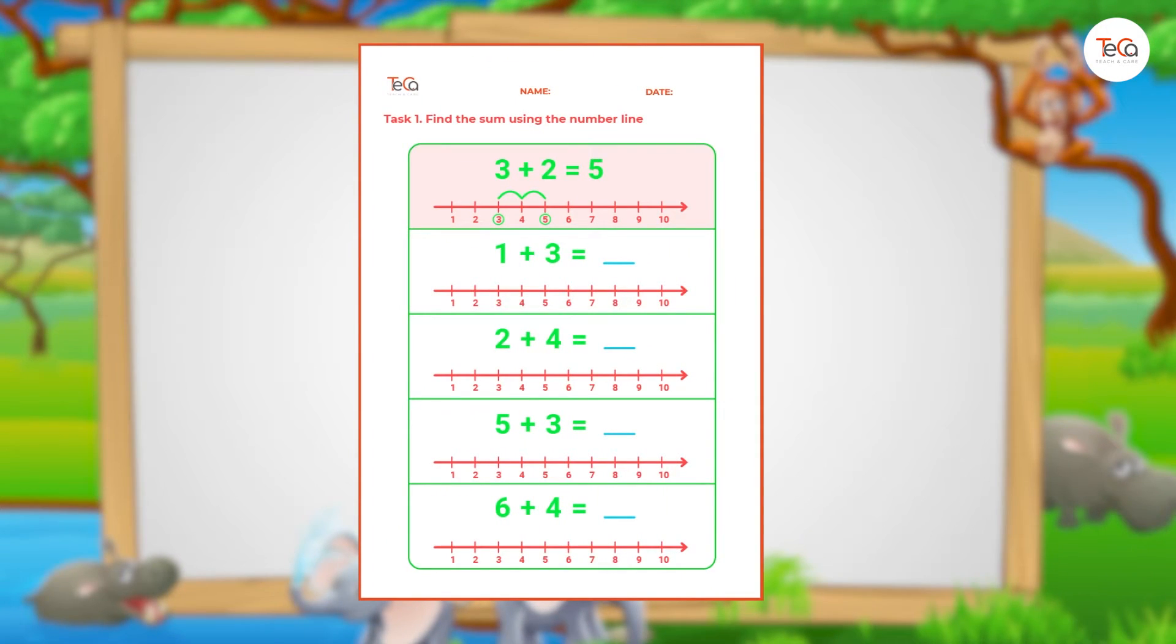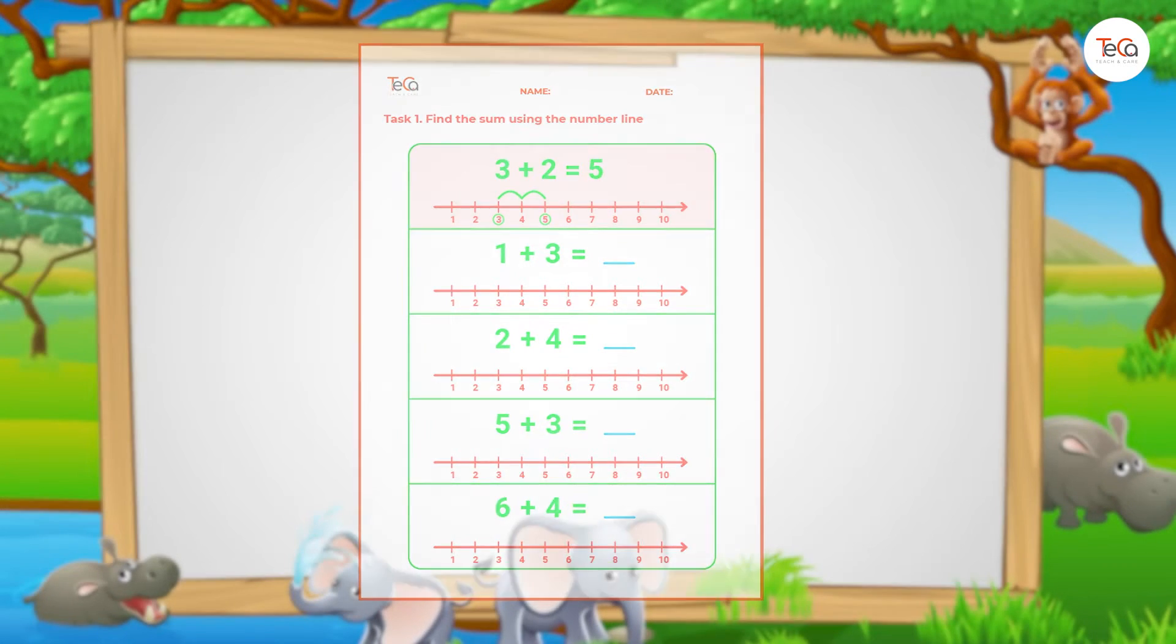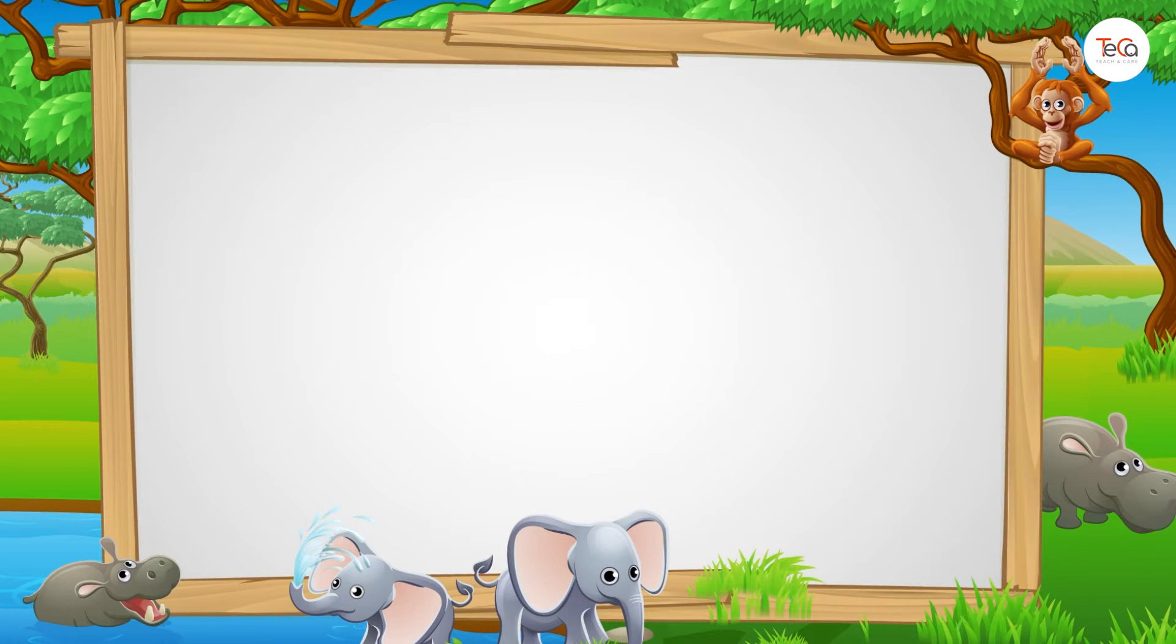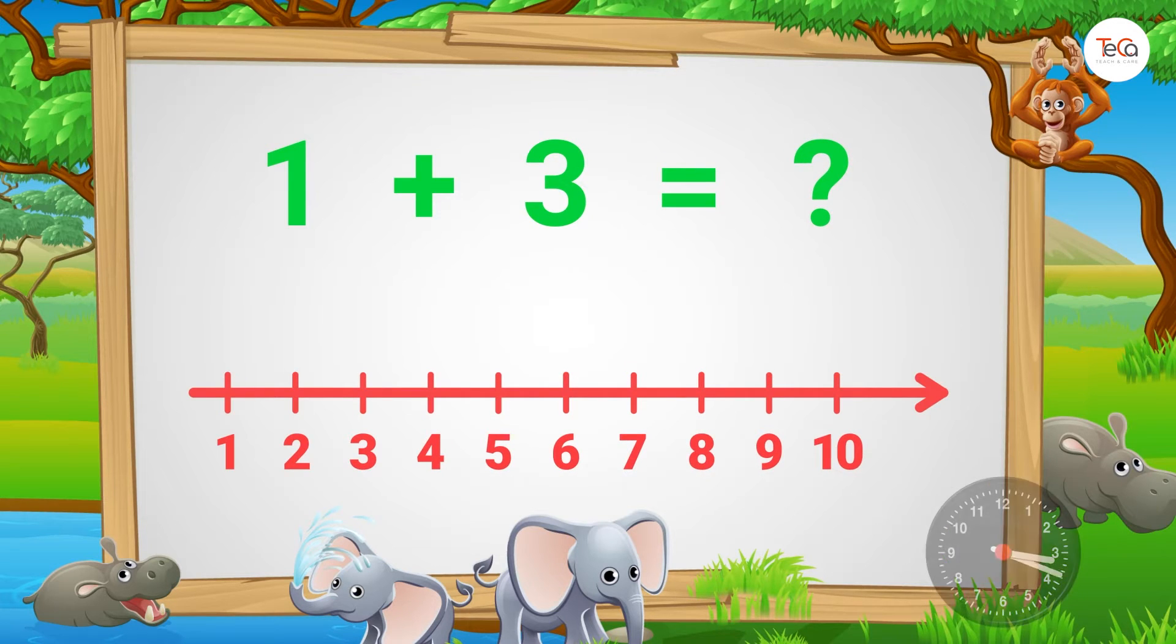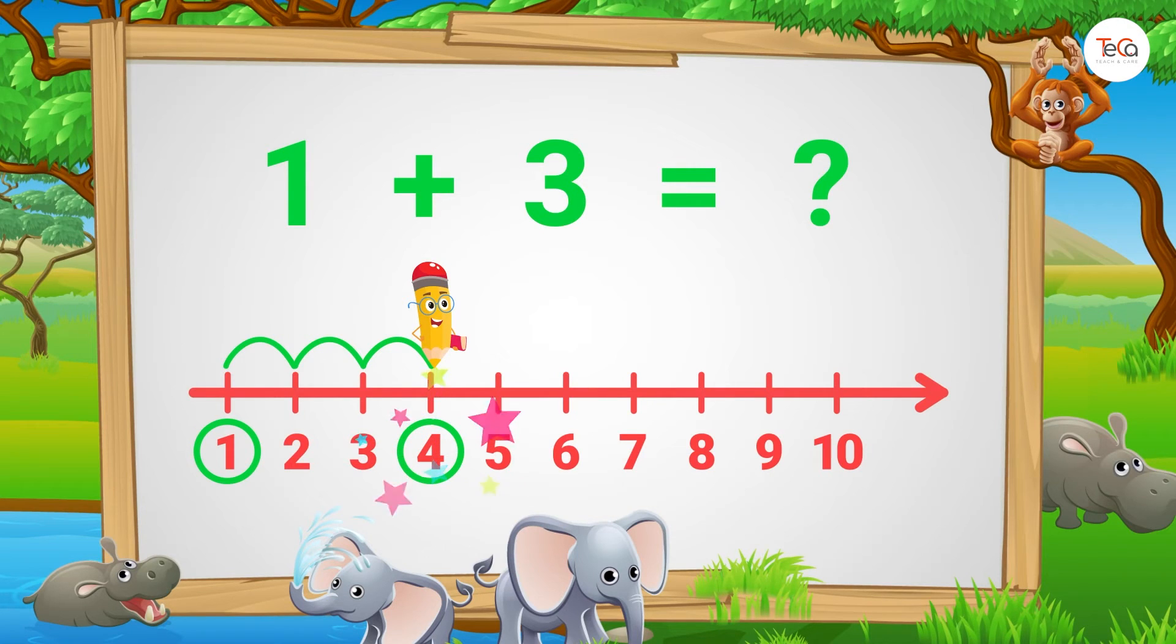Now, let's check if your answers are correct. To find 1 plus 3, start from number 1. Then jump three numbers to the right. Here, we stop at number 4.